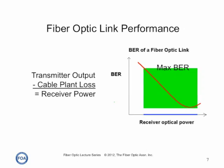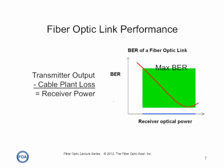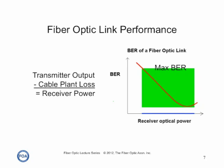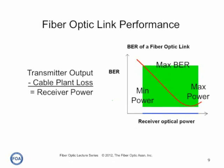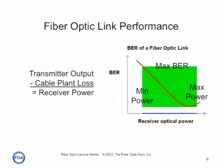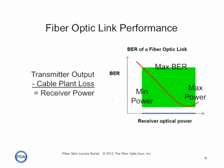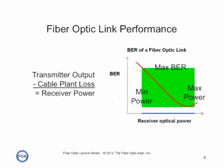The green square marks the operating range of the link. At the top, we have the maximum bit error rate that can be tolerated in that link — usually one bit per billion or thereabouts. The left-hand side of the green square is the minimum optical power that provides an adequate bit error rate. As the power increases, the bit error rate decreases and link performance improves. The right-hand side is the maximum power the receiver can tolerate before it begins getting overloaded or saturated. The transmitter output less the cable plant loss gives us the receiver power and determines how the link works.